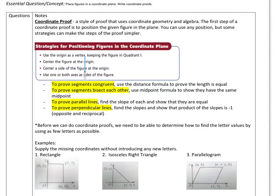Often we want to use the origin as the vertex. Try to keep it in quadrant one. You can center the figure, sometimes making it symmetric helps. Center a side of the figure at the origin. Use one or both axes as the sides of the figure, so if you're drawing a rectangle or a square, use the axes as sides. That helps out.